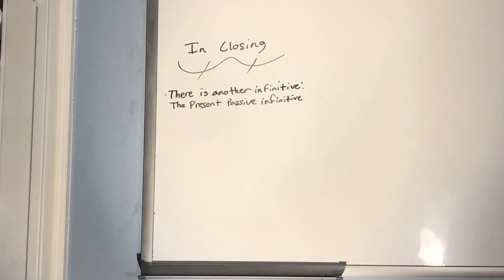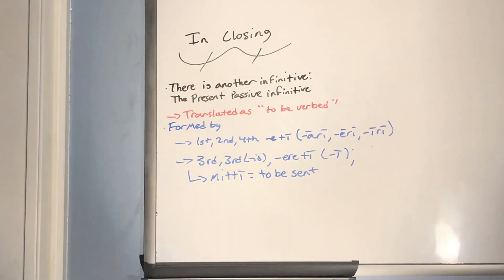The present passive infinitive — the sixth infinitive you've now learned — is translated as 'to be verbed.' Form it by going to the second principal part: for first/second/fourth conjugations, drop the -E and add a long Ī (giving -ĀRĪ, -ĒRĪ, -ĪRĪ); for third and third-IO, drop the entire -ERE and add long Ī. Example: MITTO → MITTERE → drop -ERE → MIT- → add long Ī → MITTĪ, meaning 'to be sent.' Thank you for watching, and have a great rest of your day!